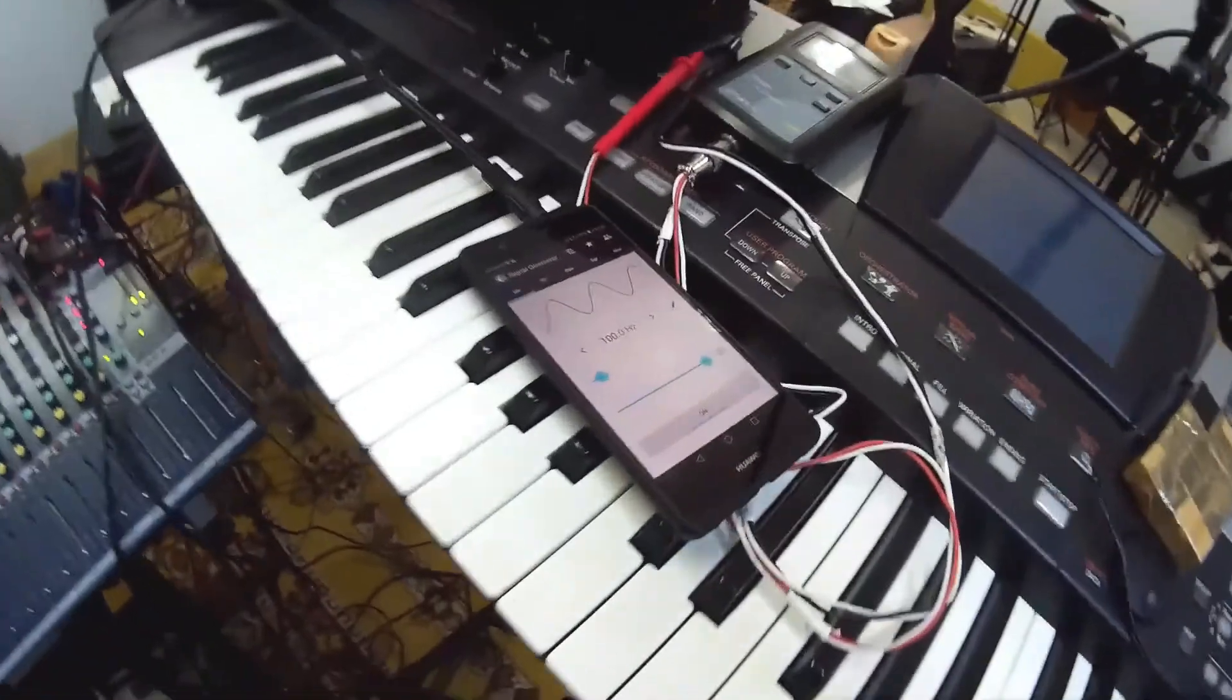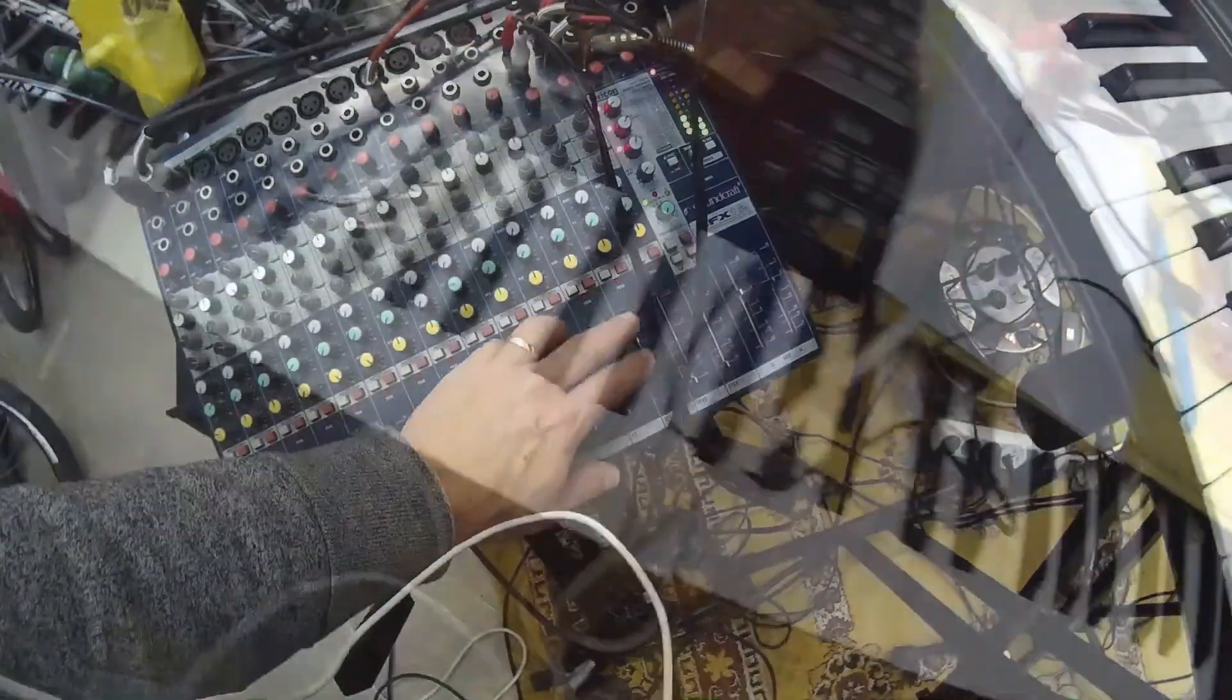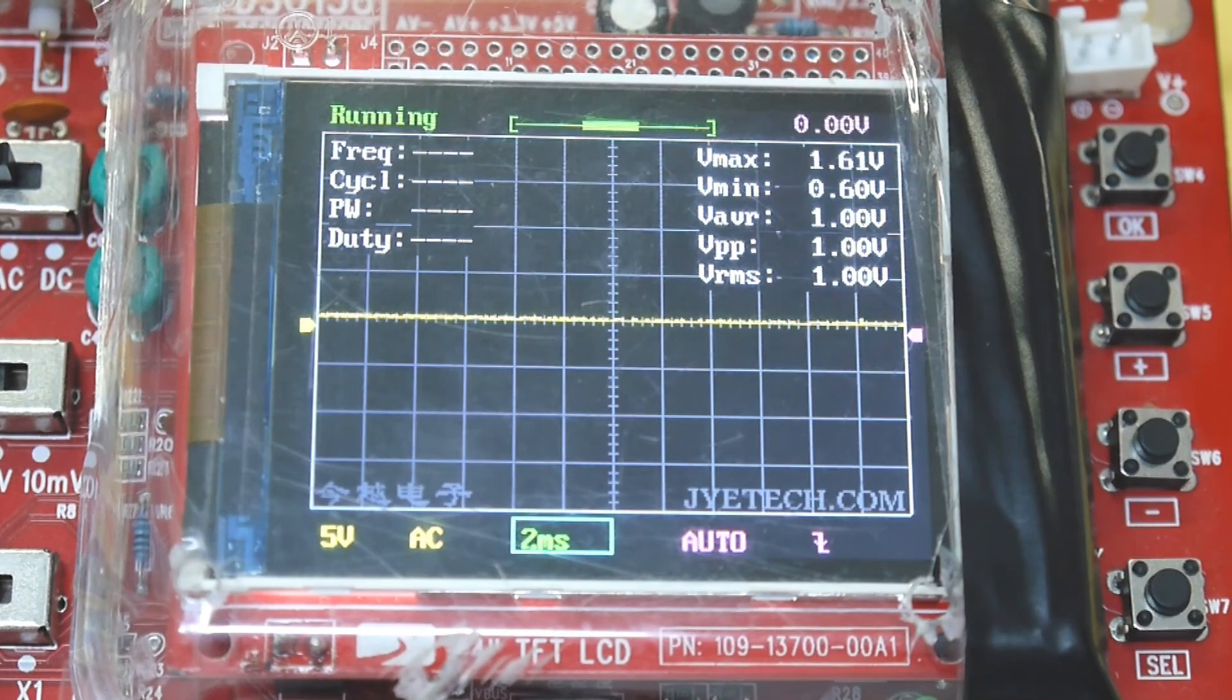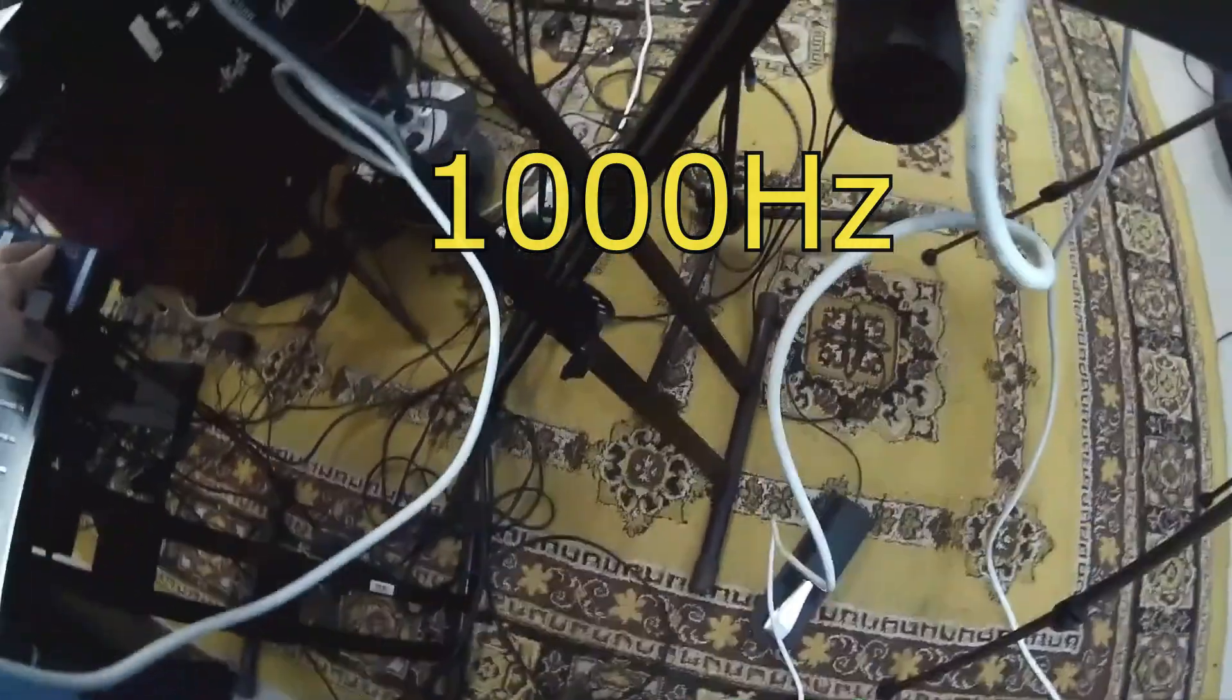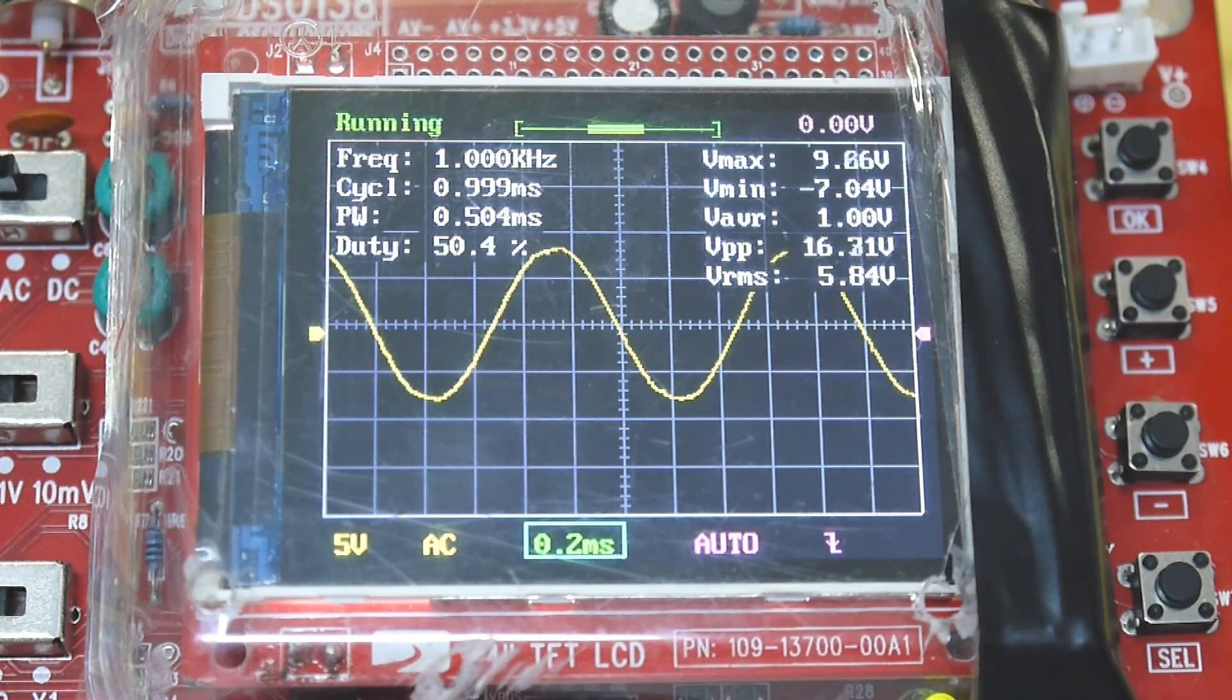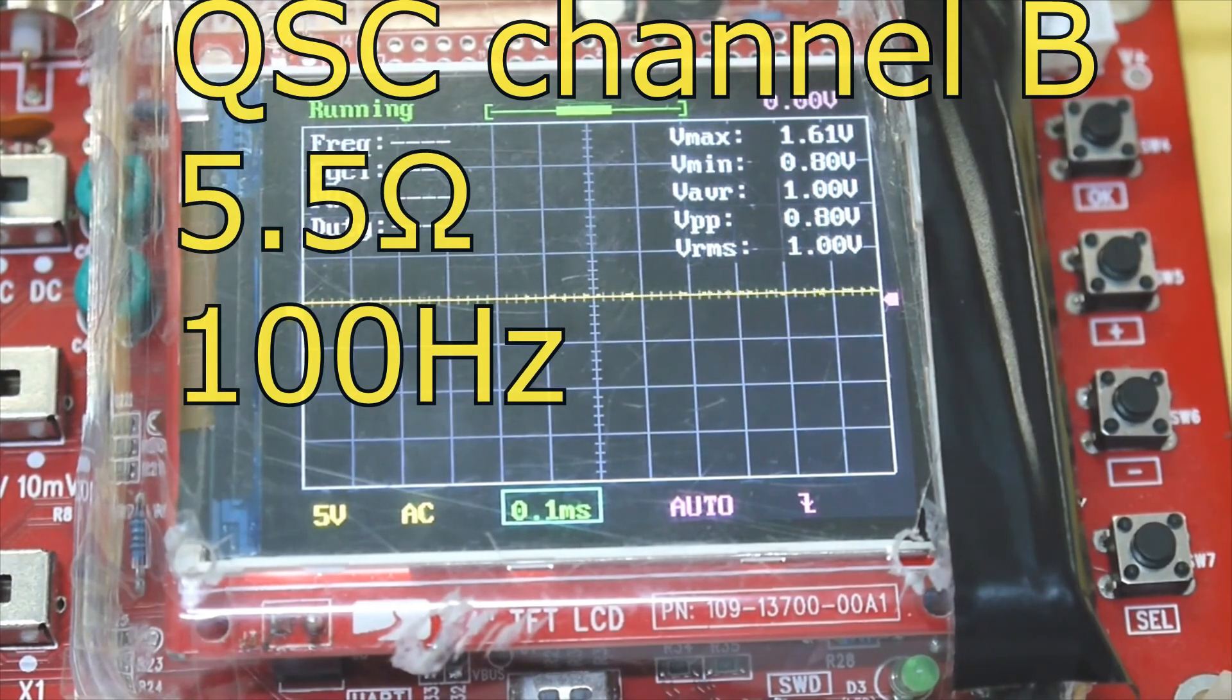We got the first test with 100 hertz. Let's fix the mixer gain. Now let's have the classic 1000 hertz. Channel B, 35.5.